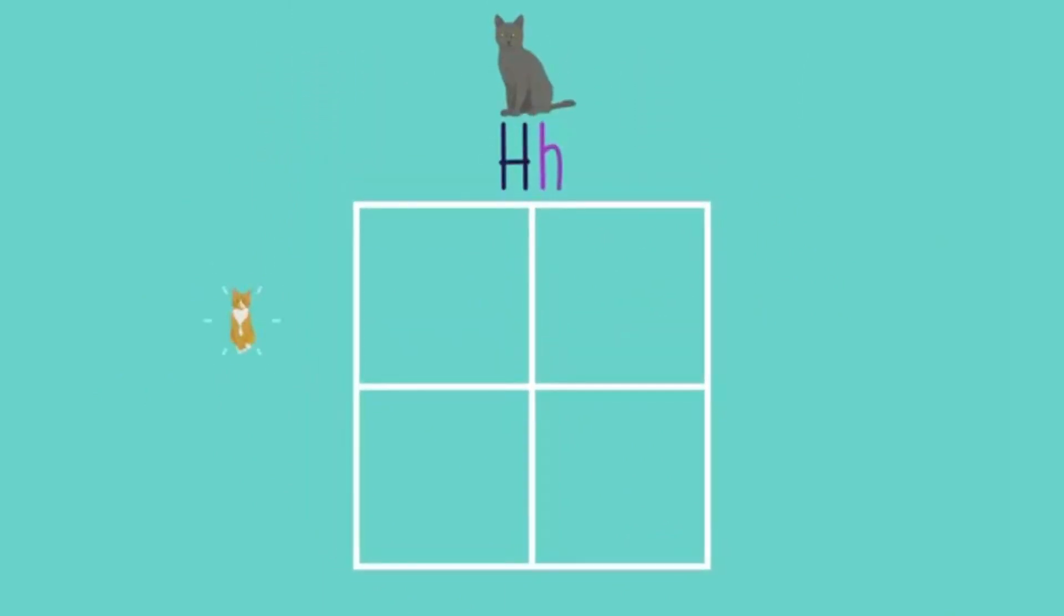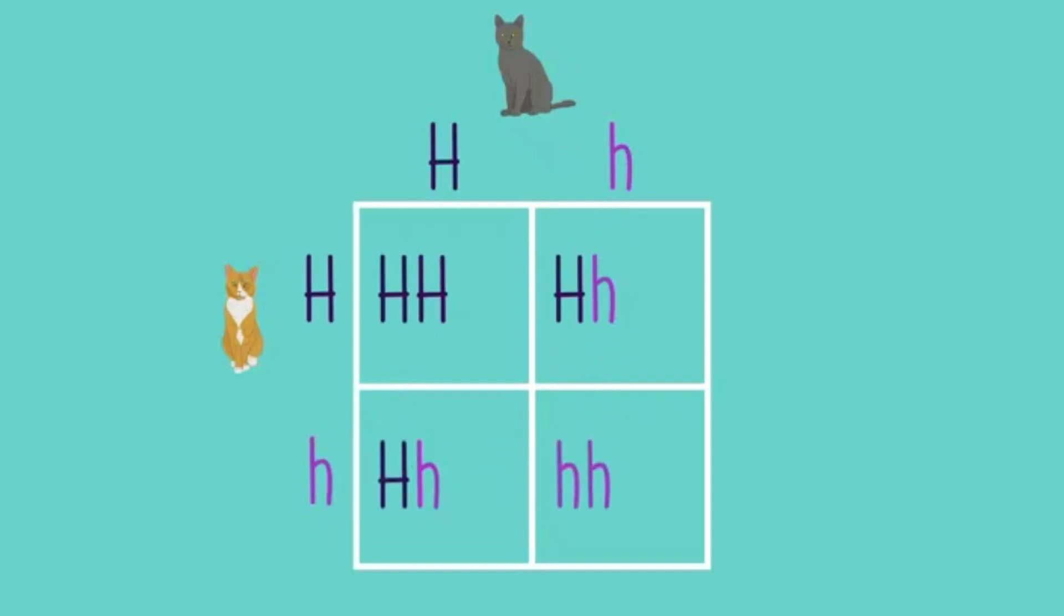Here, we're using two heterozygous short-haired cats. First, fill in the possible gametes from the parents, one along the top and one down the side. Then, work out all the possible combinations of gametes to give you the potential genotypes of the offspring. This also gives you the possible phenotypes.